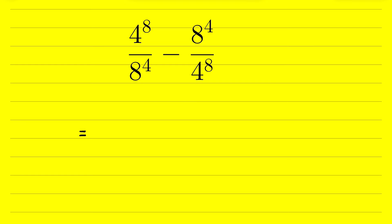Here we have 4 raised to the power 8. We can write 4 as 2 raised to the power 2, then whole raised to the power 8, upon 8 as 2 raised to the power 3, then whole raised to the power 4.